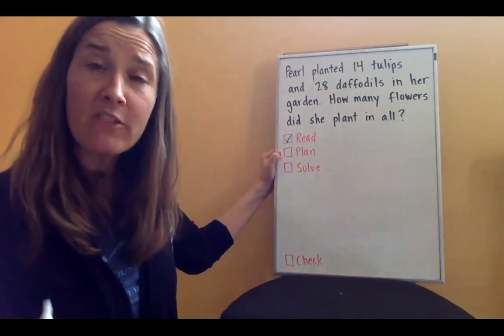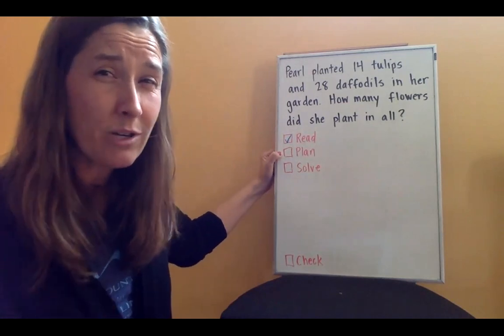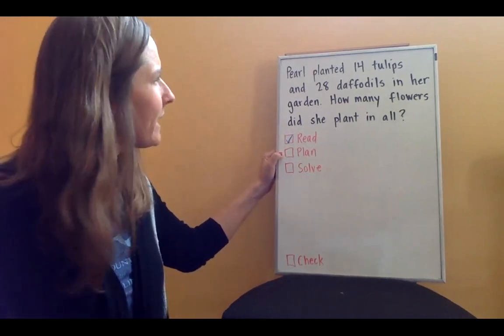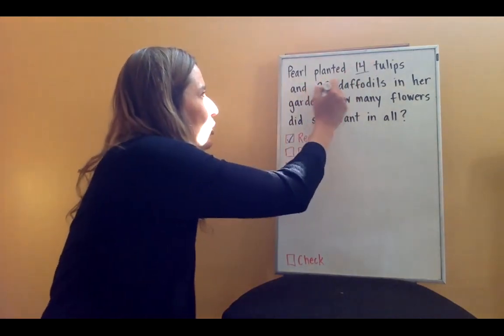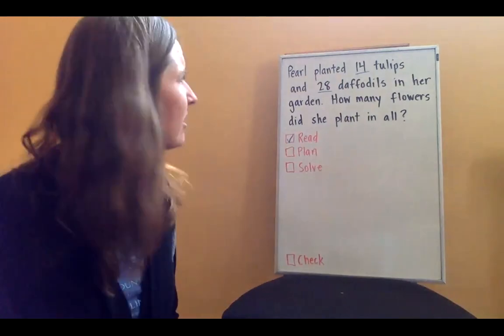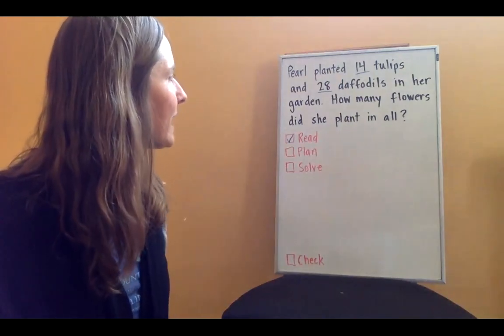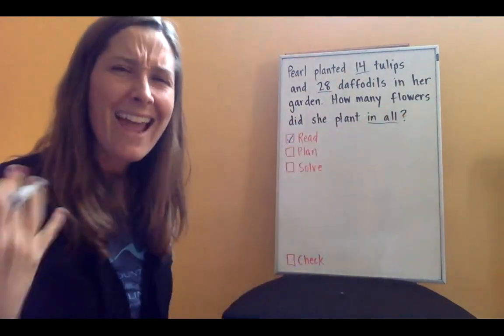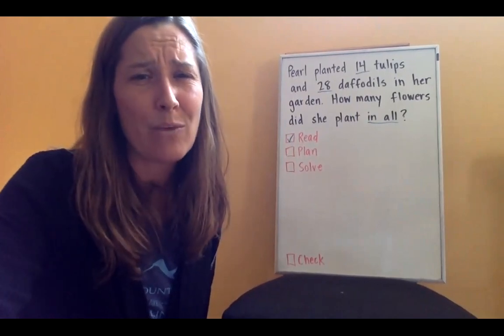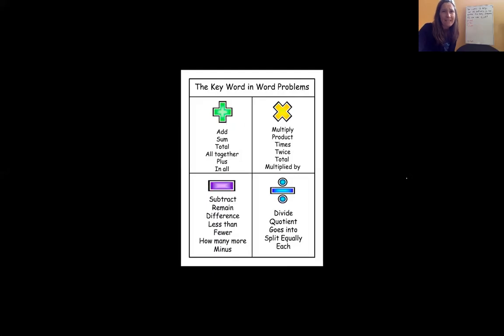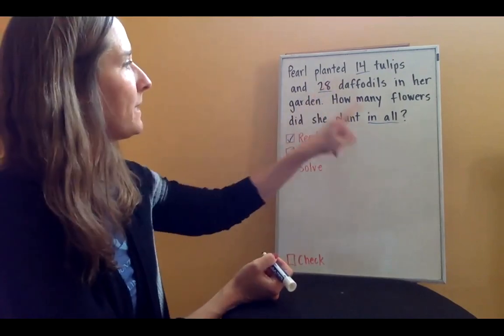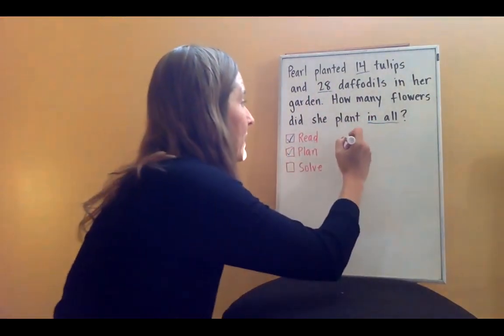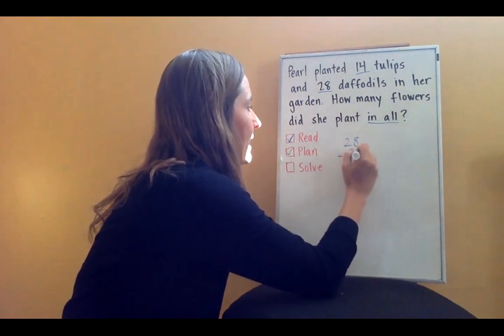And now I'm going to plan. Now part of my planning is I can read through again, but this time I'm going to look for some keywords that tell me what to do. So Pearl planted 14 tulips and 28 daffodils in her garden. You know, for me, important information would be like 14 and 28. Those seem like very important numbers to me. So I'm going to underline those. How many flowers did she plant in all? Ooh, in all. That's one of those keywords. If I go back to my list and I want to see what the keyword is, let's see here. In all, I see it. That's going to tell me to add. Okay. So now what I need to do is I need to solve it. I've come up with my plan. I know that I have some numbers and my keyword tells me to add.